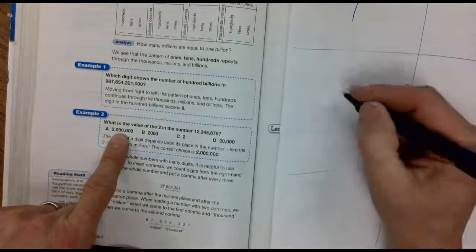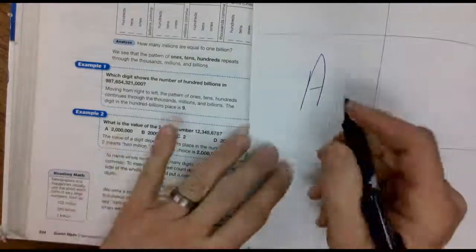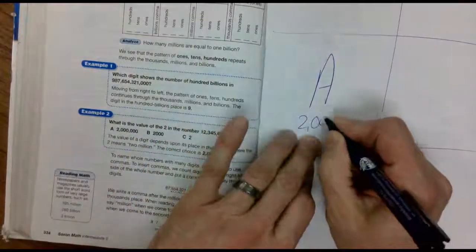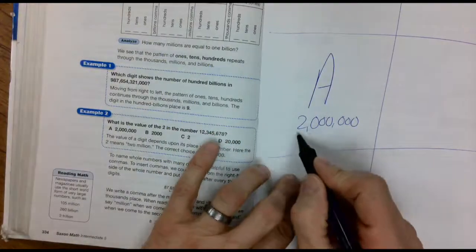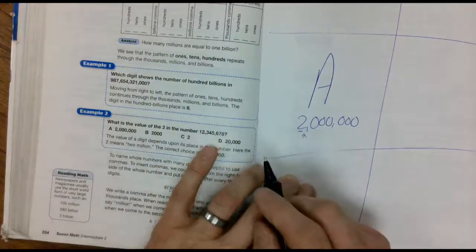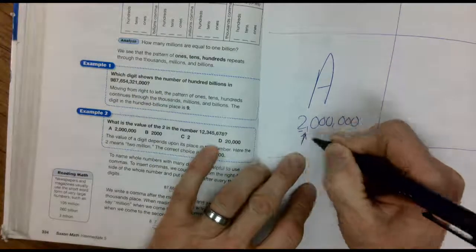A million has six zeros after it. So for the second example, your answer would be A. I like to write down two comma, three zeros comma, three more zeros. Two, the second one says million, two million.